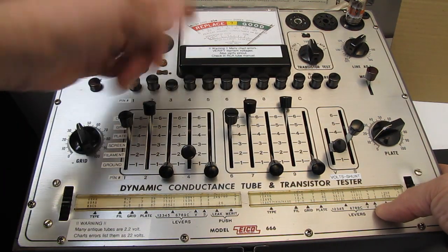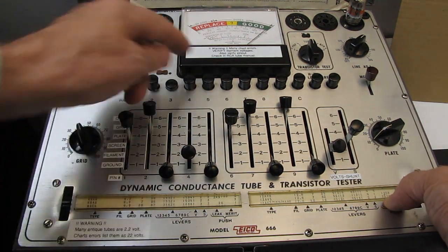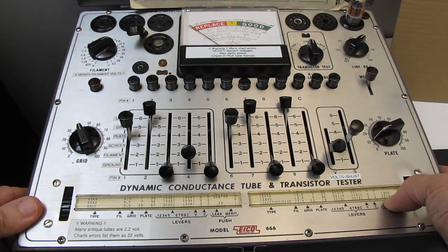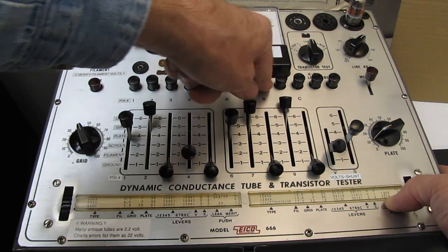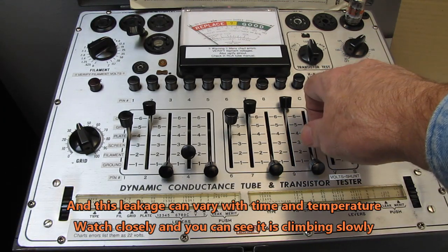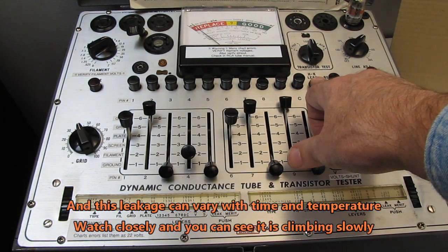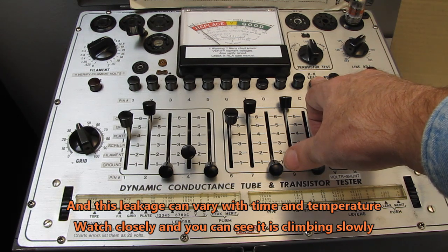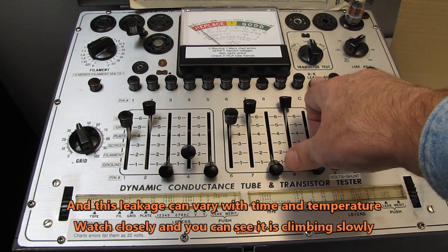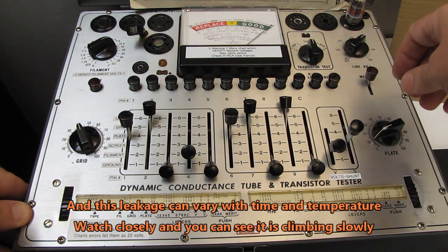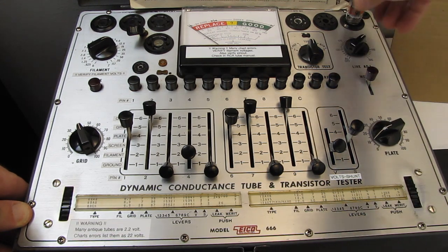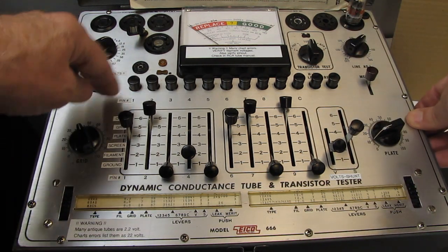So we will go to the next half of the tube. The next grid is pin 7. No shorts. Pin 8 is the next cathode. That should cancel in entirety, and it's not. So there's definitely some heater to cathode leakage in that tube. Now, I'm going to zero that out. Actually, let's take a look at the merit of that tube.